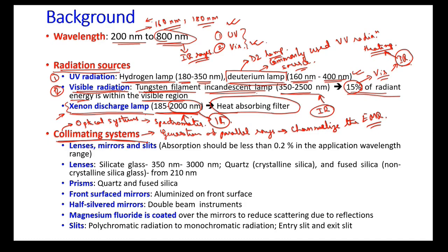After the interaction with matter, the residual electromagnetic radiations can be effectively detected by a detector. In the case of UV-visible spectrophotometers, the different types of collimating systems include lenses, mirrors, and slits. Lenses help in condensing the electromagnetic radiations — in this case, UV-visible light.